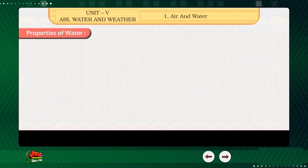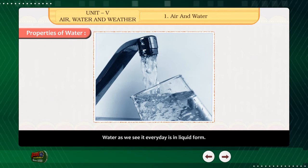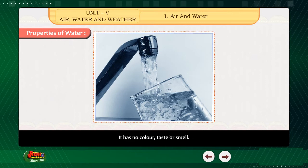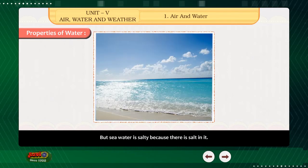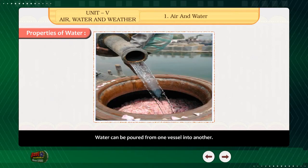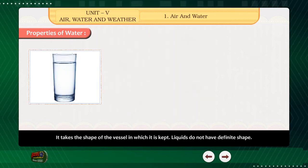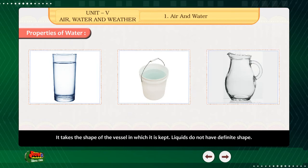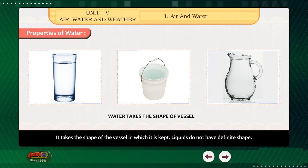Properties of water — Water as we see it every day is in liquid form. It has no color, taste or smell. But sea water is salty because there is salt in it. Water can be poured from one vessel into another. It takes the shape of the vessel in which it is kept. Liquids do not have a definite shape.